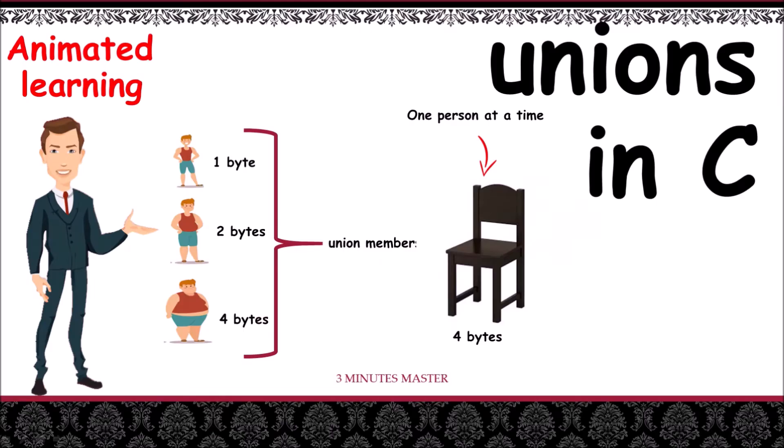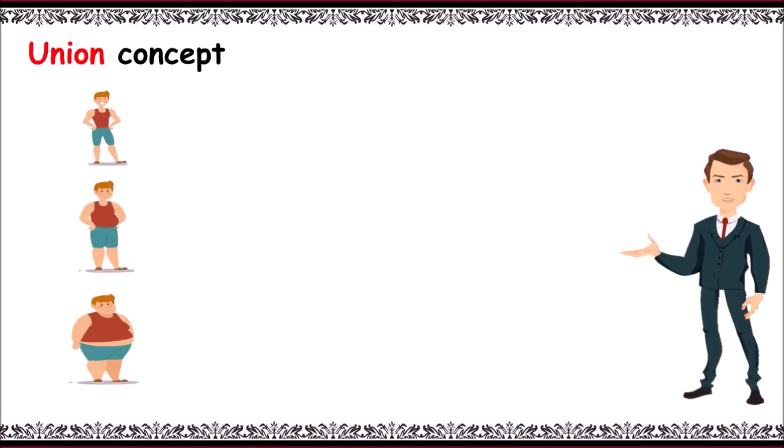Hello guys, welcome to 3mm. Let's learn unions in C. Consider there are three persons of different categories. Let their sizes be one byte, two bytes, and four bytes. Let's assume them as union members. Here we have a chair.